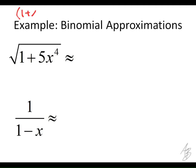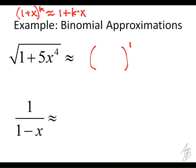So we've got (1 + x)^k is approximately equal to 1 + k times x. Does this look like this? What's different about it — is it raised to a power? It's raised to the one half. So in this example, k is going to equal one half. It's going to be something to the one half, and it's 1 plus 5x to the fourth. So instead of x, we have 5x to the fourth.